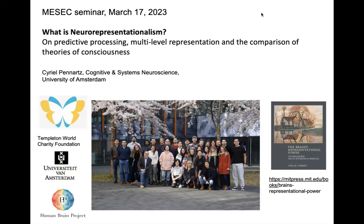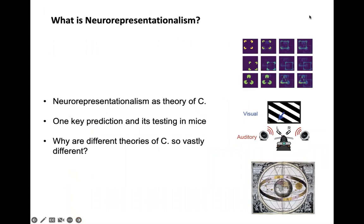This is the group at the University of Amsterdam where we are. I'll talk straight through for 45 minutes unless you have acute questions, otherwise we take the discussion and do it afterwards. The talk is set up in three parts: first, a little bit about what neurorepresentationalism is as a theory of consciousness and how it relates to predictive processing. We're going to take one key prediction of the theory and test it in mice. And hopefully there's time left for comparing some theories of consciousness and asking why they are so vastly different.